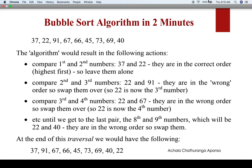Next we compare the third and fourth numbers: 22 and 67. They are in the wrong order, so we swap them. After swapping, 22 is now the fourth number. We do the same process until we get to the last pair — the 8th and 9th numbers — which will be 22 and 40. They are in the wrong order, so we swap them. Doing this operation from the leftmost to the rightmost is called one traversal.